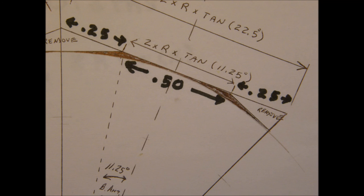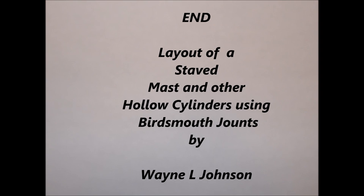Since the width of the staves often changes along their length, the actual measurements must also change. In the shop, we will build a spar gauge to facilitate drawing these trim lines on each of the staves. That pretty much covers the calculations necessary to build a stave cylinder of just about any specification. The next set of videos will demonstrate the construction of our whisker pole that we laid out in Example 4.